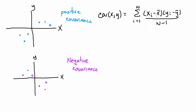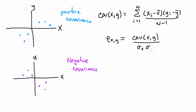For a negative covariance, when X is above its average, it's more likely that Y will be below its average. Covariance relates to correlation through this relationship: the correlation ρ_XY equals the covariance between X and Y divided by the standard deviation of X and the standard deviation of Y. Both covariance and correlation are attempting to measure how two variables relate to each other.